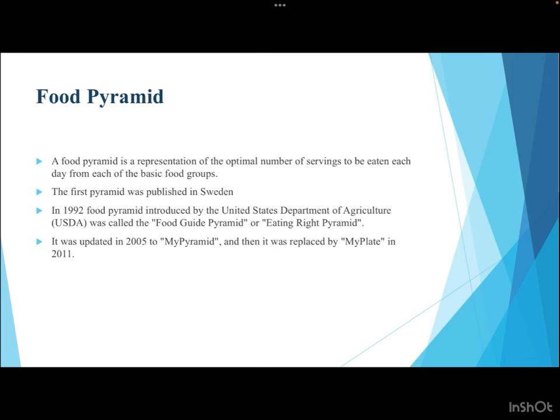In terms of getting the right kind of food, the food pyramid comes into an important picture. A food pyramid is a representation of the optimal number of servings to be eaten each day from each of the basic food groups. The first food pyramid was developed in Sweden. In 1992, the USDA introduced the food guide pyramid, also called the eating right pyramid. It was updated in 2005 to MyPyramid and then replaced by MyPlate in 2011.